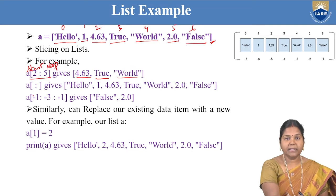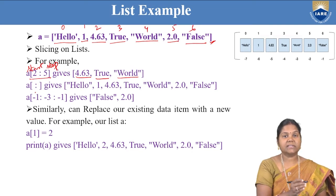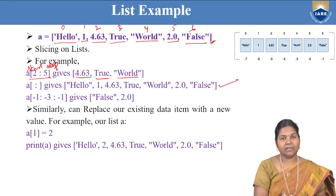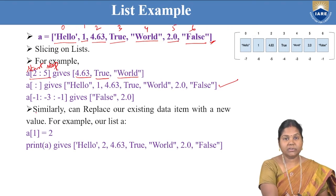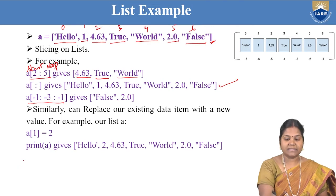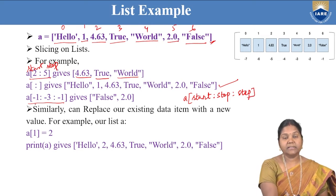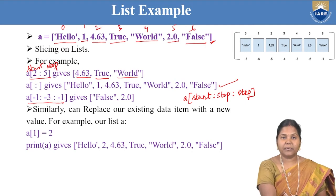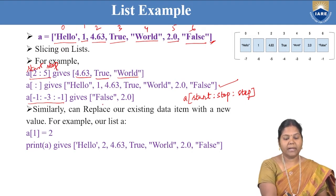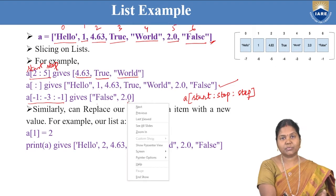If you simply write a[:], without mentioning start and stop values, by default it gives you the complete list as the output. If you want to mention a step, you can write slicing with a start value, stop value, and step value. For example, using negative indexing: start is minus 1, stop is minus 3, step is minus 1. It will give you minus 1 and minus 2 because at minus 3 it stops.